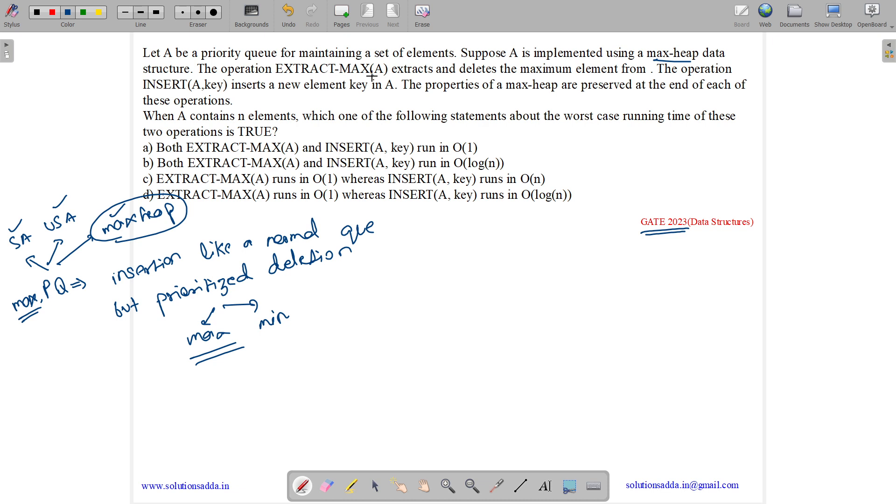The operation EXTRACT_MAX(A) extracts and deletes the maximum element from A. So extract of A basically deletes the max item. The operation INSERT(A, key) inserts a new element key in A. So these are basic insert and delete operations. The property of a max heap are preserved at the end of each operation. So max heap needs to be satisfied at the end of both operations.